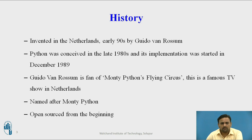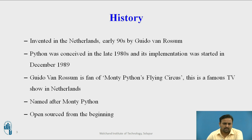Some programmers are not aware of this, but it is surprising that Python was available from the 90s — it was there, but silently in the background. It was not in the boom. When Java and other programming languages were used frequently by MNCs, Python was there but not focused on by anybody. It was conceived in the late 90s, and its implementation actually started in December 1989.